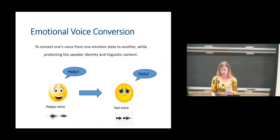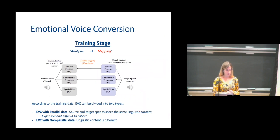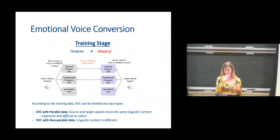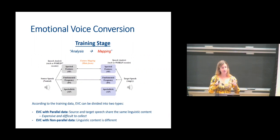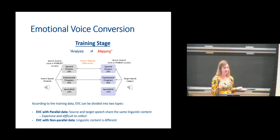Another direction we work on is emotional voice conversion — basically converting the speaker's emotional state. You can see this as the manipulation of emotion: for example, your happy voice can be converted to your angry voice. More recently, we also try to look at problems like mixed emotions within a sentence — sometimes you can be happy and surprised, or frustrated and sad — and we are looking at those aspects in our recent submissions.